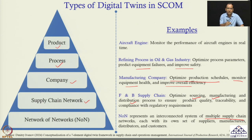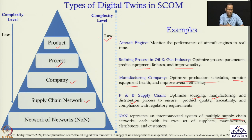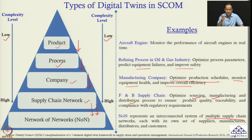There are various types of digital twins in supply chain and operations management: product, process, company, supply chain network, and network of networks. We have developed a pyramid structure with a logic behind it. If you see the complexity level, at product level it is the lowest. As we move from product to process, process to company, company to supply chain network, and supply chain network to network of networks, the complexity increases. We have the highest level of complexity when we develop a digital twin of network of networks. This slide gives you a summary of the various types of digital twins and their complexity levels.